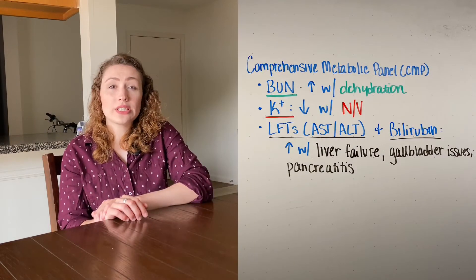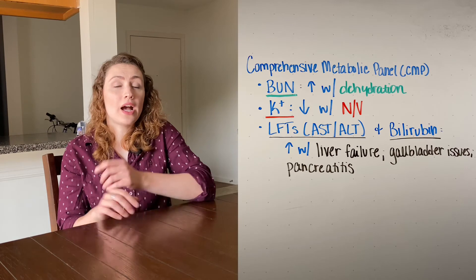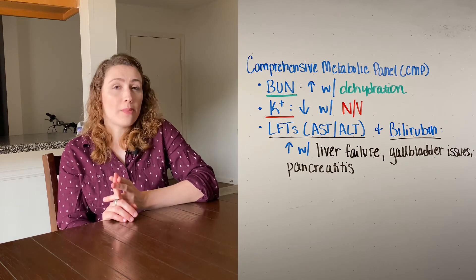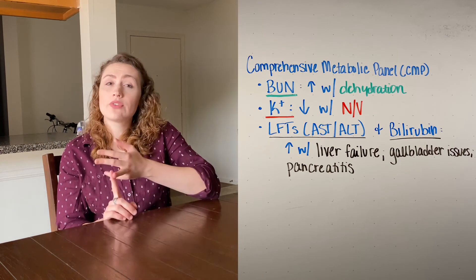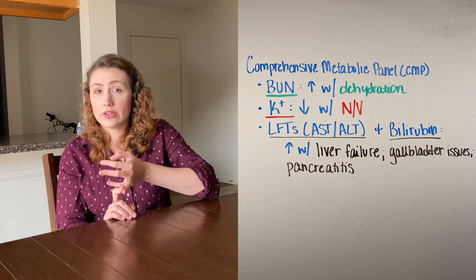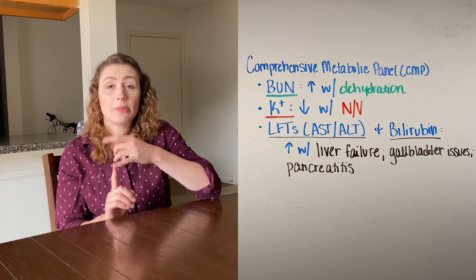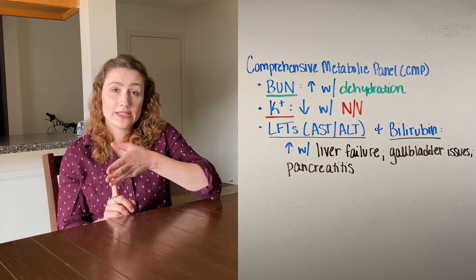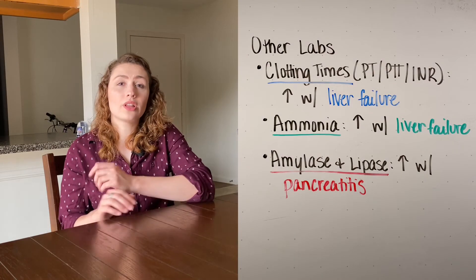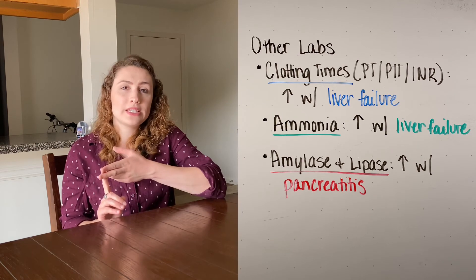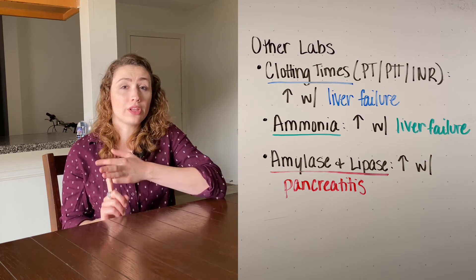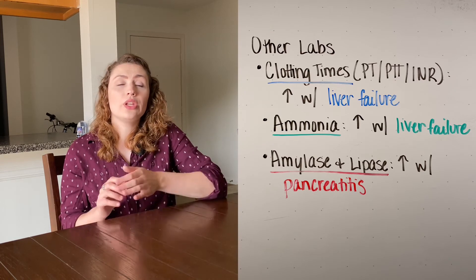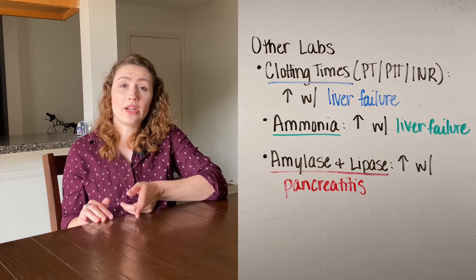On the CMP, BUN will be high in cases of dehydration, and potassium will be low with vomiting and diarrhea. Liver function tests — AST, ALT, and bilirubin — will be elevated with gallbladder problems, liver disease, or pancreatitis. As far as other tests, clotting times including PT, PTT, and INR will be high with liver failure, and ammonia levels will also be elevated in liver failure. Amylase and lipase will be elevated with pancreatitis.